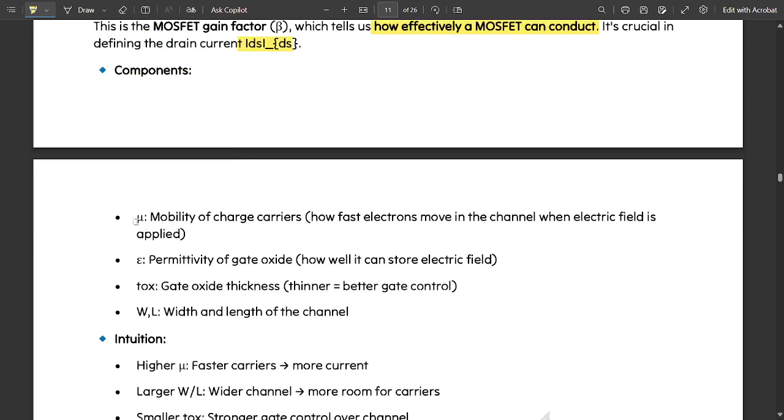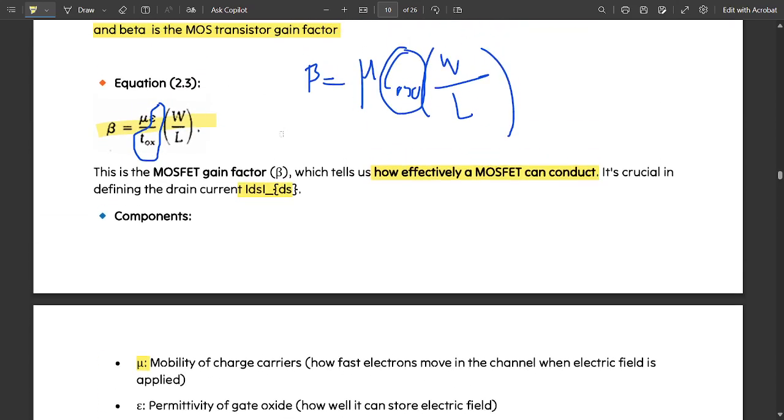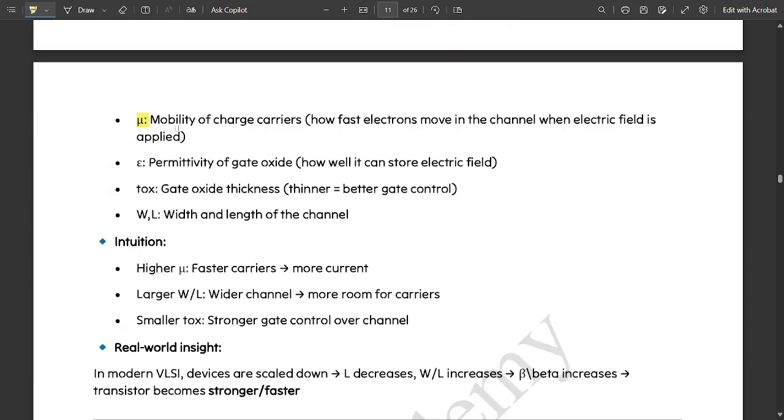Components: one is mu. This mu is basically the mobility of charge carriers. Mobility of charge carriers, that is it checks how fast electrons move in the channel when electric field is applied. Next is epsilon, that is permittivity of gate oxide. How well it can store in the electric field.